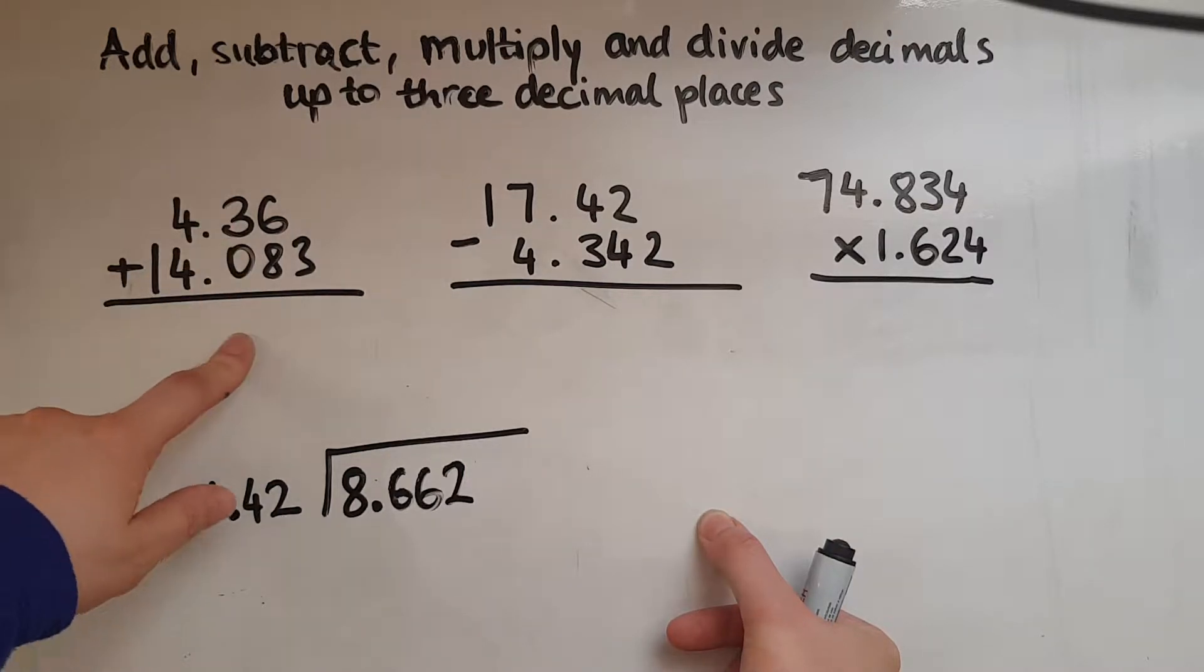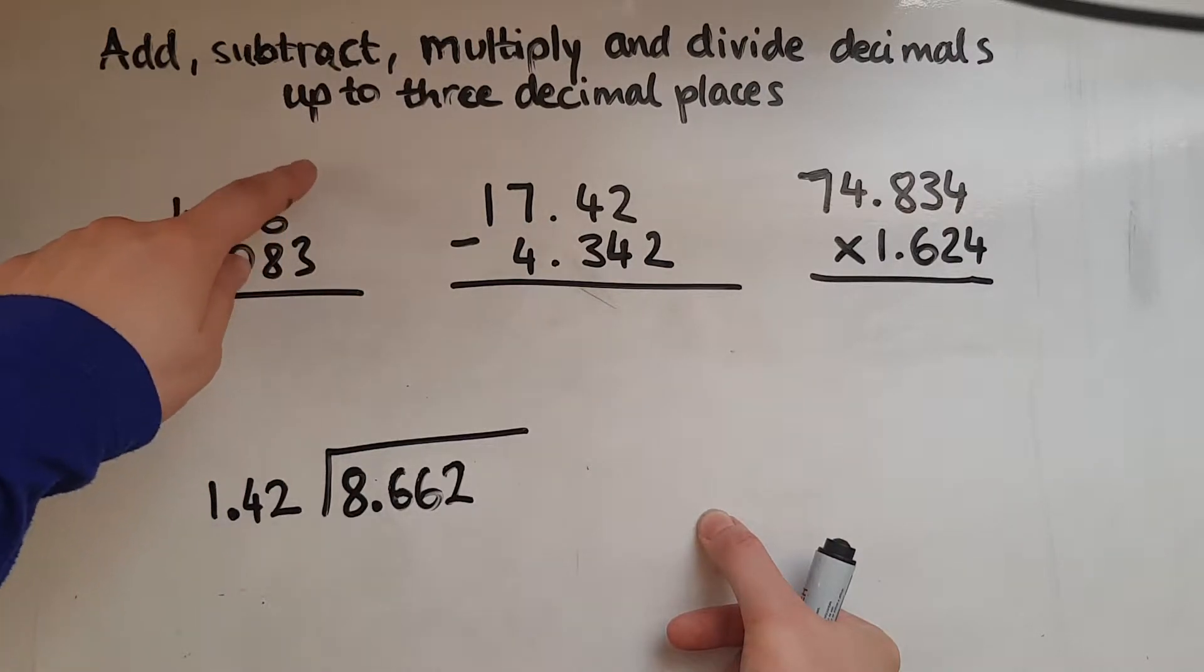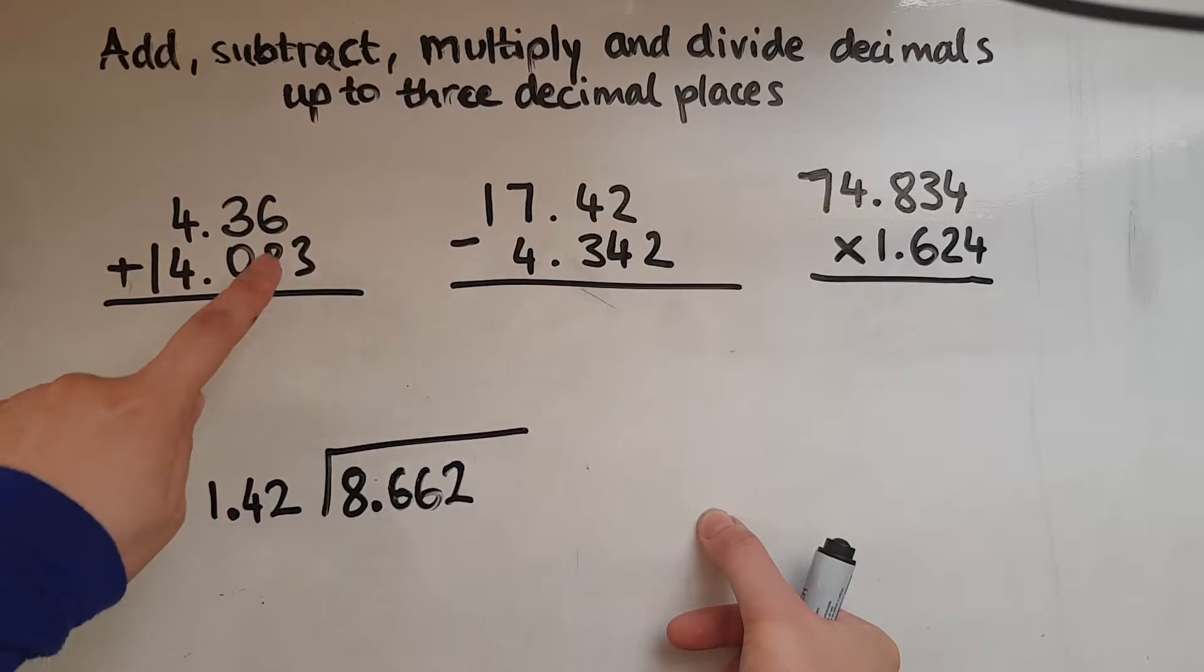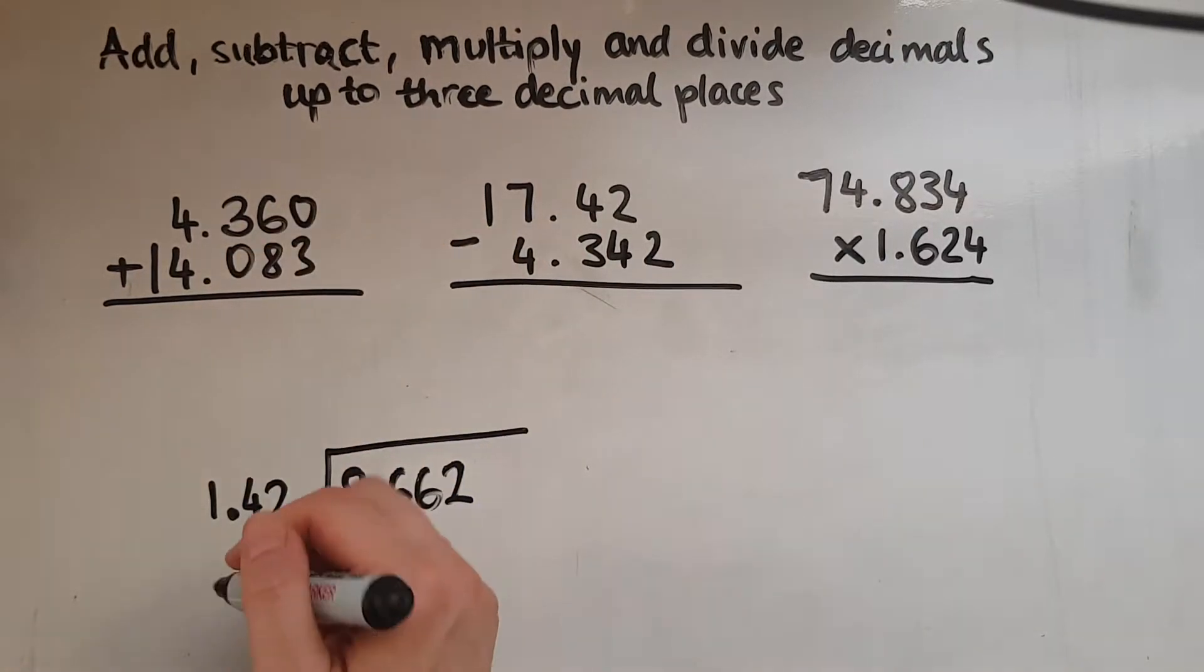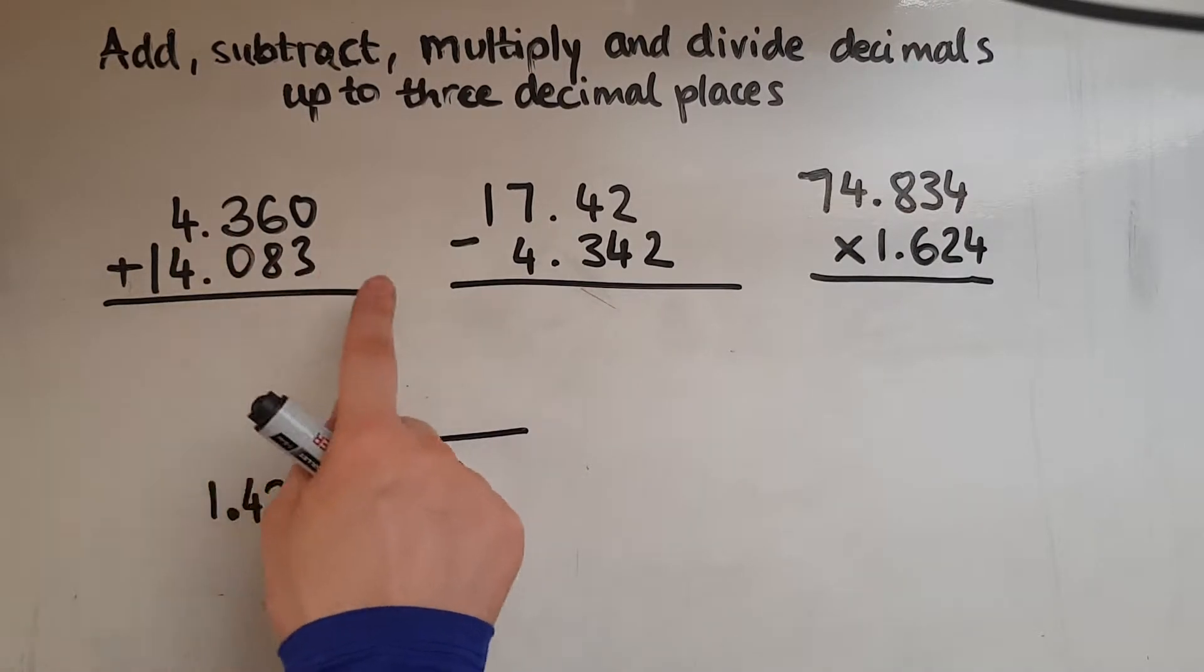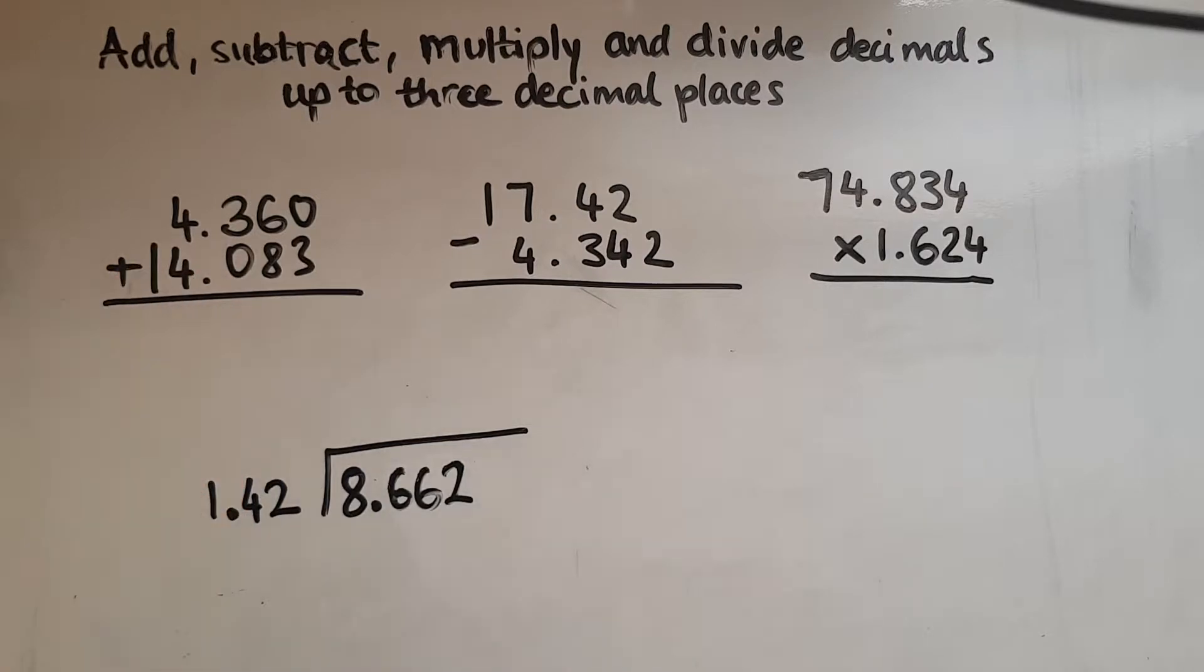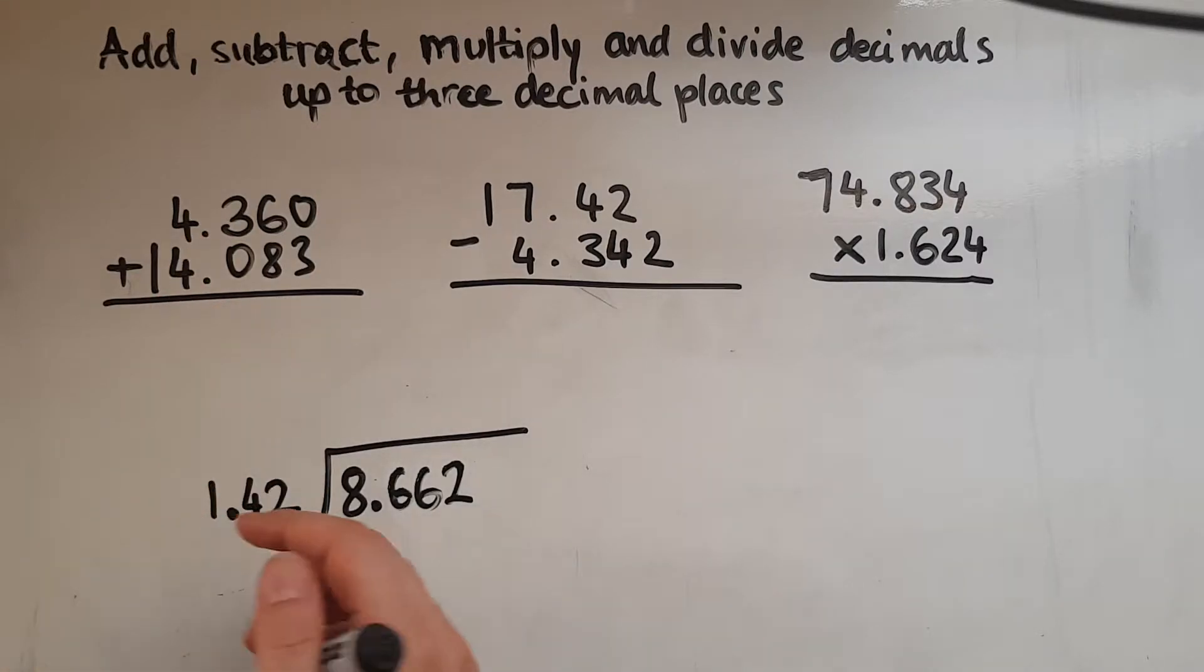Tenths matches with the tens, hundreds match with the hundreds and thousands match with the thousands. So we haven't got a digit here but we can fill it with a zero if we want because zeros after the decimal point don't make any difference. And a clue here is if you've lined up the decimal points then pretty much everything else is fine.